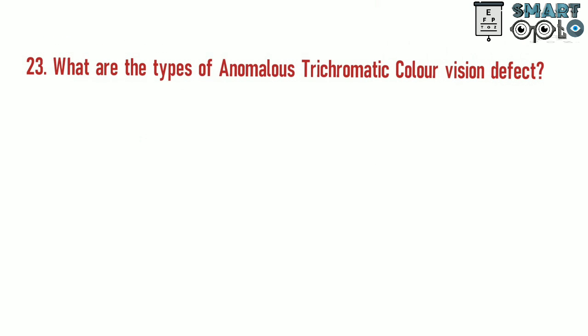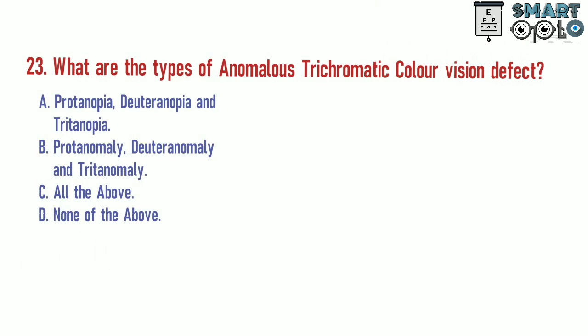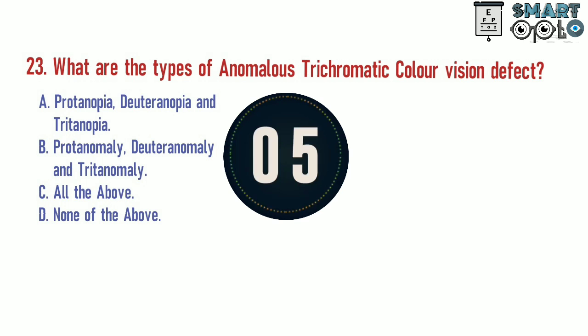Question 23. What are the types of anomalous trichromatic color vision defect? A. Protanopia, deuteranopia, and tritanopia. B. Protanomaly, deuteranomaly, and tritanomaly. C. All of the above. D. None of the above.